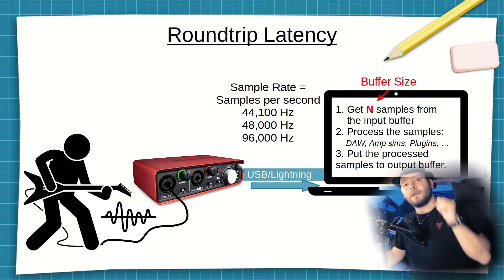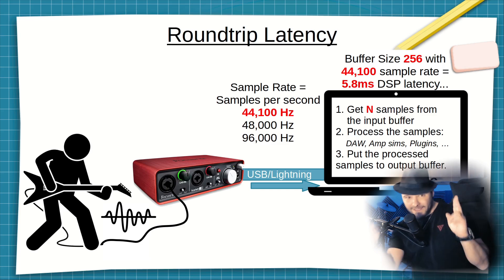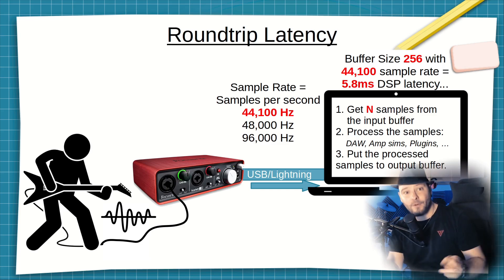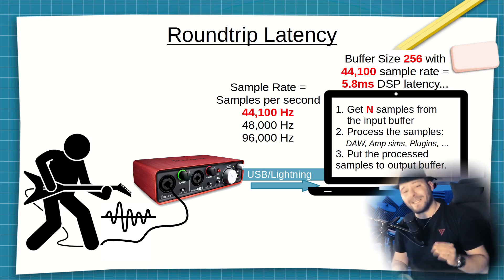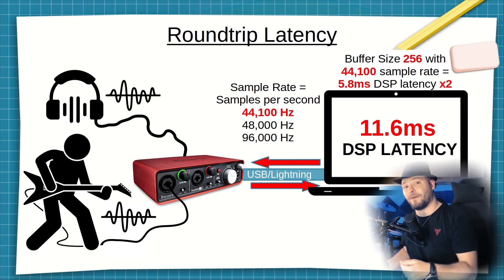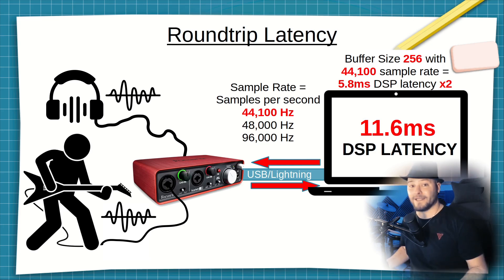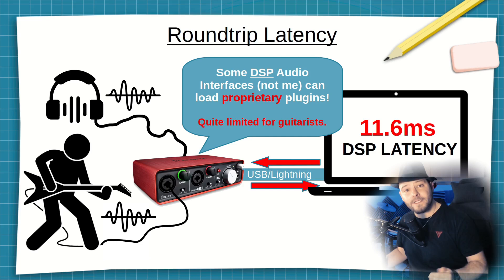If you have a sample rate of 44.1 kHz and a buffer size of 256 — very common values — it means that from one second digitized into 44,100 samples, 256 are taken to be processed. That means there's always at least a 5.8 millisecond delay with these values. But in roundtrip there is both an input and output buffer, so with these values you can never have below 11.6 milliseconds of latency. DSP-capable audio interfaces can do better, but as said, they are very limited for the home guitarist and you'd end up running amp sims on the computer anyway.